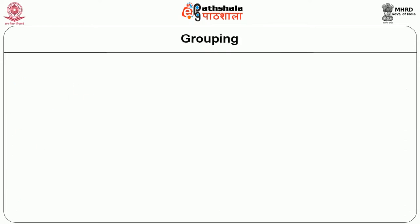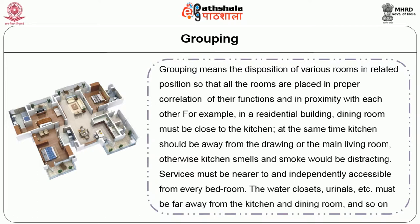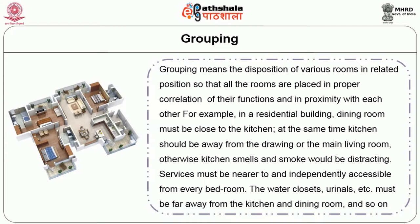The fourth principle is grouping. Grouping means the disposition of various rooms in related positions so that all rooms are placed in proper correlation of their functions and in proximity with each other. For example, in a residential building the dining room must be close to the kitchen, yet the kitchen should be away from the drawing or main living room; otherwise kitchen smells and smoke would be distracting. Services must be nearer to and independently accessible from every bedroom. The water closet, urinals, etc. must be far away from the kitchen and dining room.